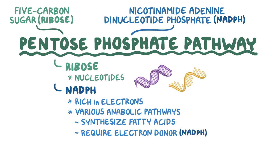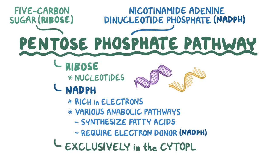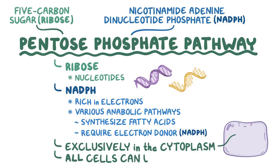Just like glycolysis, the pentose phosphate pathway happens exclusively in the cytoplasm, and it does not require any special organelles, which means that all of our cells can use this pathway.